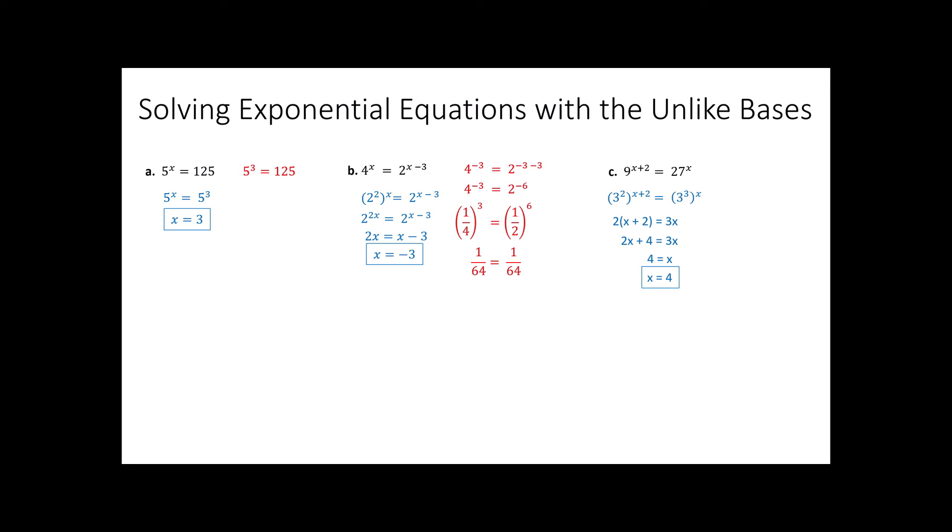Once again, if I plugged 4 into my original equation, I get 9 to the 4 plus 2, which is 6. 9 to the 6 is 531,441. And 27 to the 4th, ironically, is the exact same thing. Now obviously I did not do that by hand. I typed that into my calculator. But I want you to at least see that it does still work. However, the rest of these I did not do checks on. I will leave that to you. But certainly they should come out the exact same way.